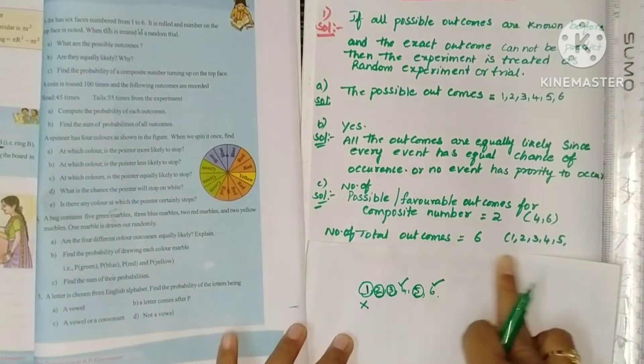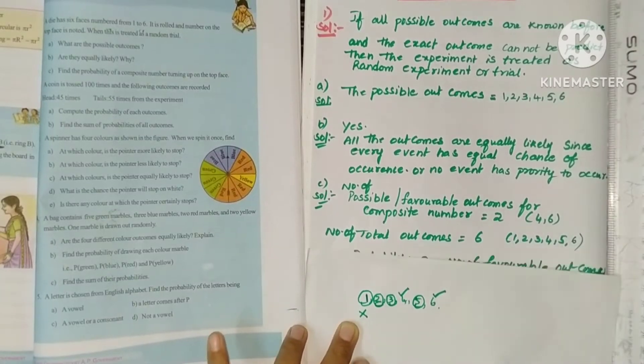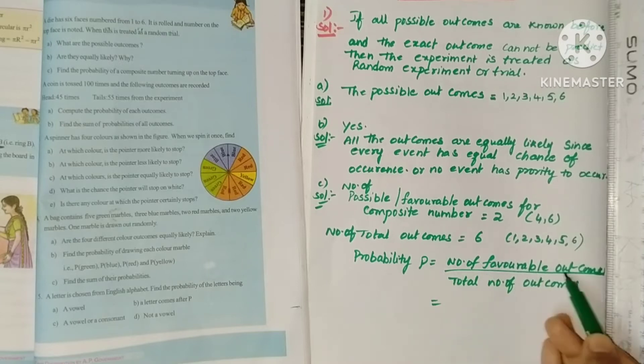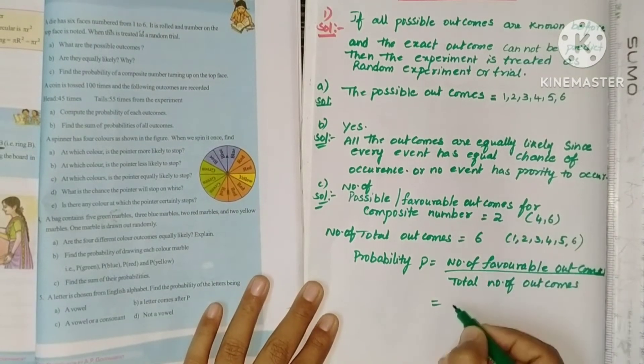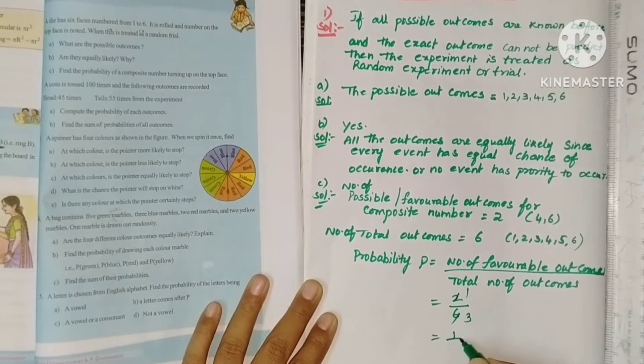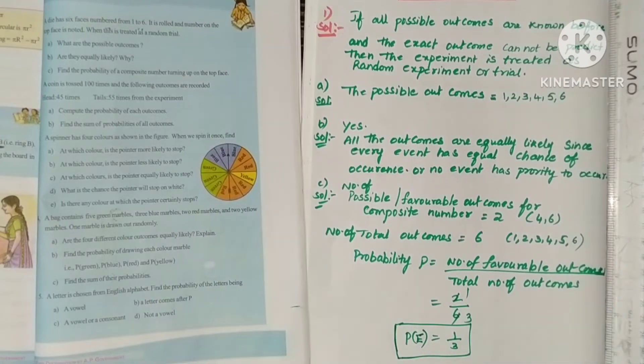Number of favorable outcomes for composite number, 4 or 6, is 2. Number of total outcomes we know is 6: 1, 2, 3, 4, 5, and 6. Next, probability formula. Probability equals number of favorable outcomes by total number of outcomes. So here favorable outcomes 2, total 6. 2 by 6 equals 1 by 3. So here probability P of E equals 1 by 3. This is the first problem solution.